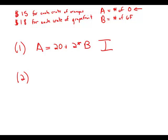Okay. So what that means is for every crate of oranges he ships, he gets $15. So 15 times A is the amount of money he made from oranges. 18 times B is the amount of money he made from grapefruit. And together, these add up to $38,700.